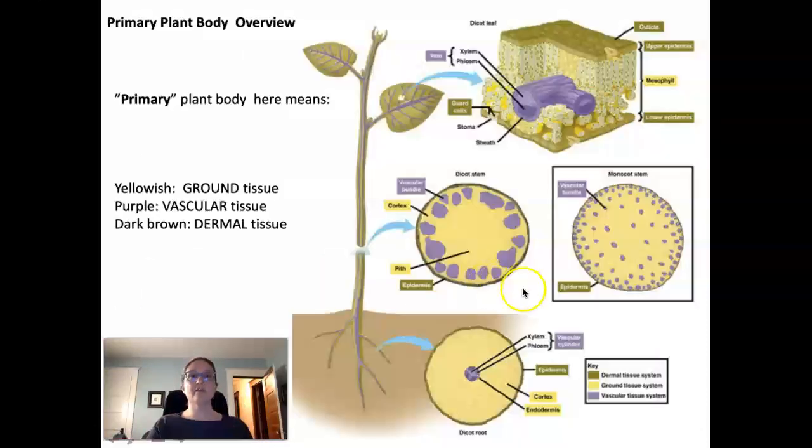So I want to show another picture of these tissue types. I really like this diagram because it shows all of the different tissue types in the shoot and in the roots and in the leaves. So in a longitudinal section and then also in cross sections. Here, this is the entire primary plant body. And what I mean by primary plant body here is that it's the part of the plant that is actively growing or has actively grown within the last growing season.